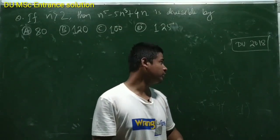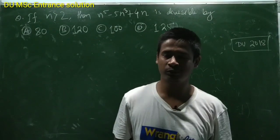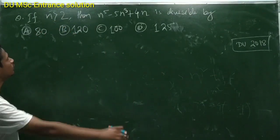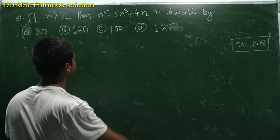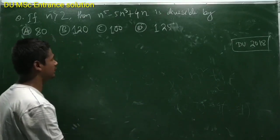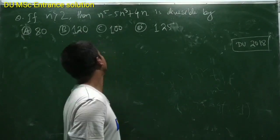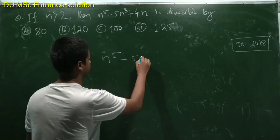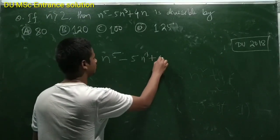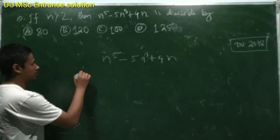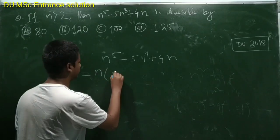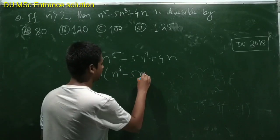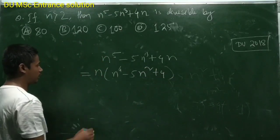Hello everyone, from Delhi University Entrance 2018 paper. This question is from the number theory part. They're asking about if n is greater than 2, then n to the power of 5 minus 5n cubed plus 4n. First, we will take common n, then it will become n to the power 4 minus 5n squared plus 4.